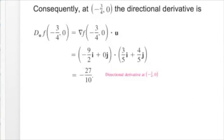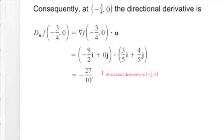The last step is to take the dot product of the gradient and the unit vector. The gradient at the point is (−9/2, 0), and the unit vector is (3/5, 4/5). Multiplying the first components: (−9/2)·(3/5) = −27/10, and the second component contribution is 0. So the directional derivative at the point (−3/4, 0) is −27/10.